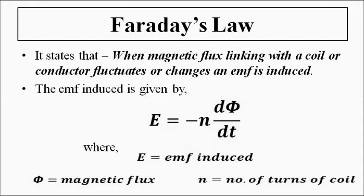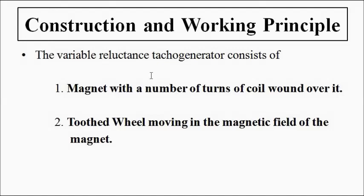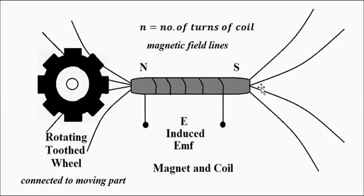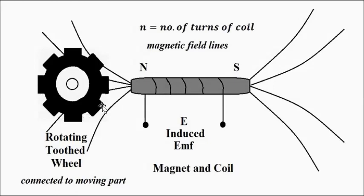This variable reluctance tachogenerator — its design and construction consists of a magnet with a number of turns of coil wound over it. This magnet produces a magnetic field, in close vicinity of which we have a toothed wheel which is free to rotate. It rotates in close vicinity of the magnetic field produced by this magnet.